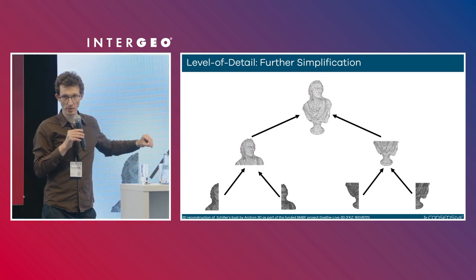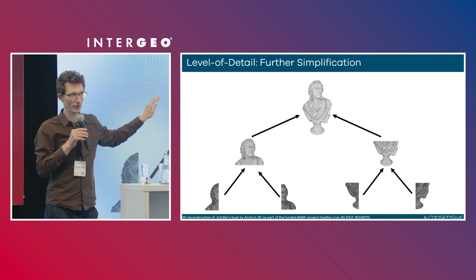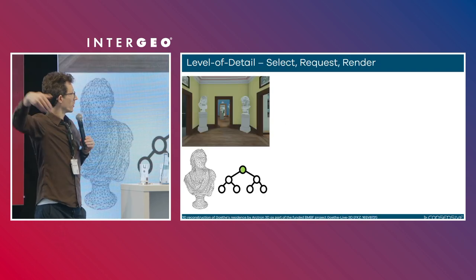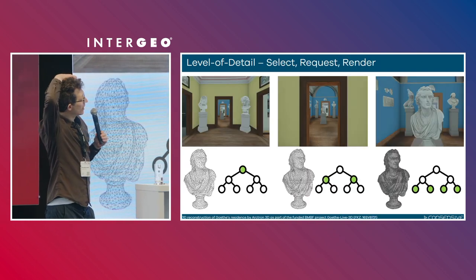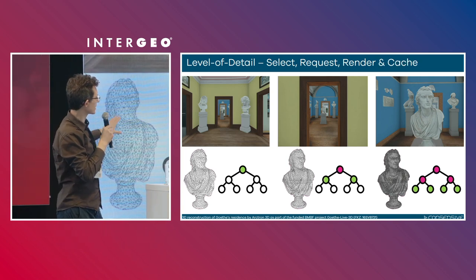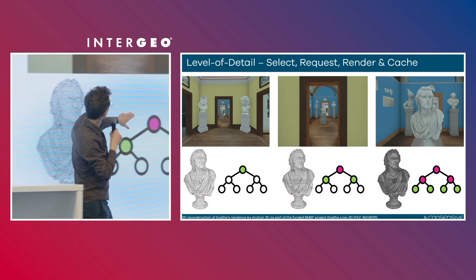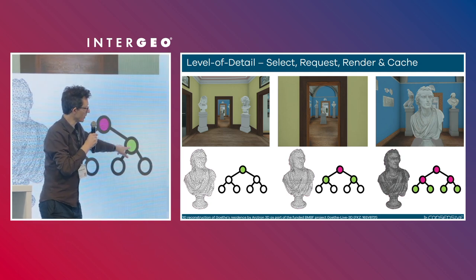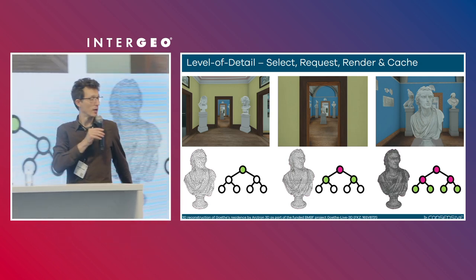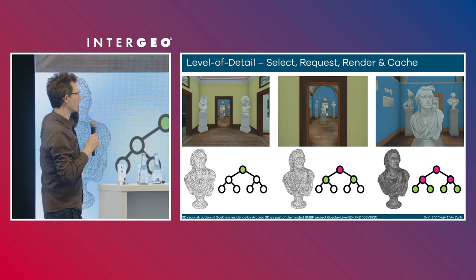This is simplified for just one object with only two levels of detail, but of course it also applies to more complex settings. When we are far away, only the root node is rendered. As we move closer, we retrieve these intermediate nodes — shown in green. When we go down to the leaf nodes, everything shown in pink indicates it's cached, so we don't need to download it again.